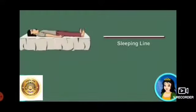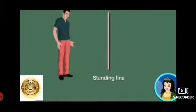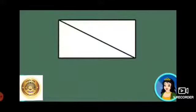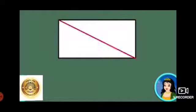Children, we have three types of straight lines: sleeping line, standing line, and slanting line. Look, this shape has two sleeping lines, two standing lines, and one slanting line.